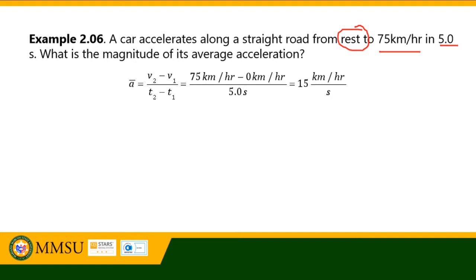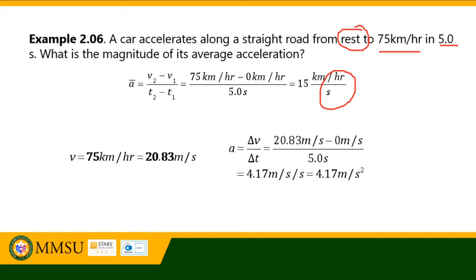However, since the unit of time appears twice, we can simplify by converting the velocity to meters per second. 75 kilometers per hour is equivalent to 20.83 meters per second. Applying the same equation, acceleration equals 20.83 m/s minus 0 m/s, divided by 5 seconds, which is equal to 4.17 meters per second squared.